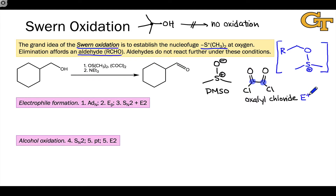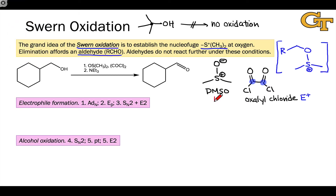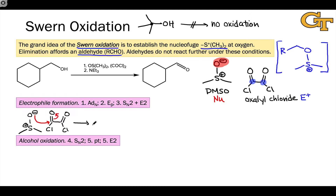Knowing that oxalyl chloride will act as our electrophile, we can think about how DMSO acts as a nucleophile — and this electrophile formation happens before the alcohol gets involved. The oxygen in DMSO, based on the O⁻ resonance structure, is the most nucleophilic atom. In the first step, the O⁻ adds to one of the carbonyl carbons of oxalyl chloride. Nucleophilic addition establishes an intermediate with an anionic oxygen and a chlorine in the beta position — a good leaving group beta to an anionic oxygen — so we can engage in beta elimination.